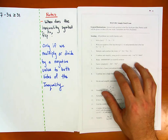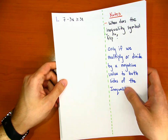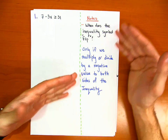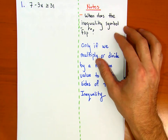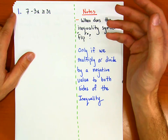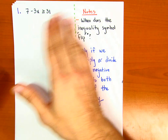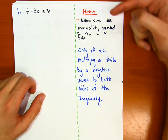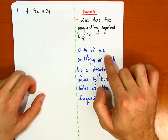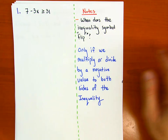Let's look at question number one. For question one, I wrote it down and added some notes on the side. The question is: 7 minus 3x is greater than or equal to 31. We want to isolate x and express it as an inequality. Whenever we isolate x with an inequality, there's a question of when the inequality symbol flips — and it only flips if we multiply or divide both sides by a negative value.